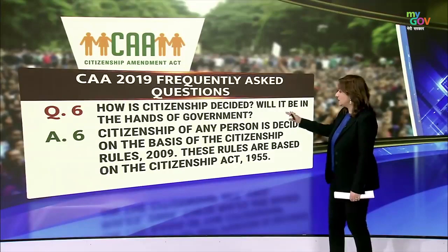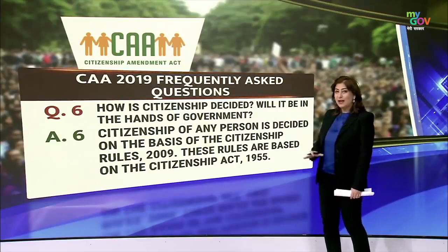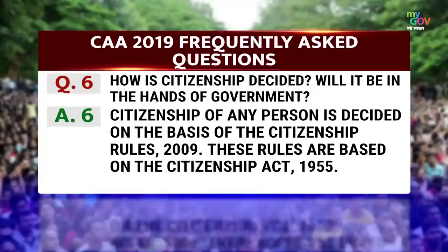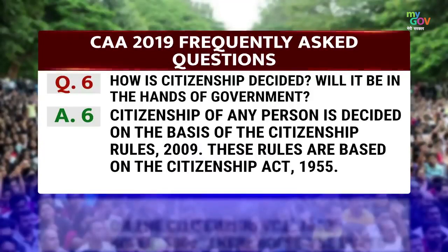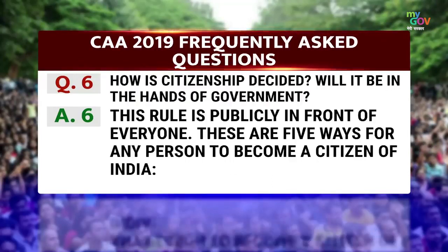How is citizenship decided, and will it be in the hands of the government? Citizenship of any person is decided on the basis of the Citizenship Rules 2009, and these rules are based on the Citizenship Act of 1955. This rule is publicly in front of everyone — it is in the public domain.